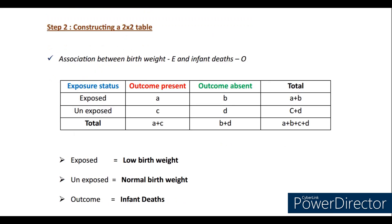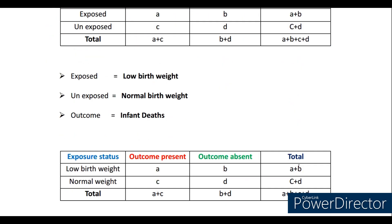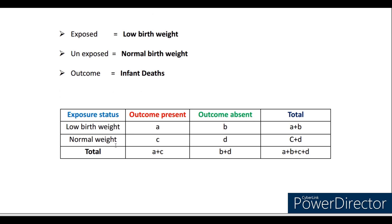The next step is construction of a 2x2 table. The table has exposure status, outcome present, outcome absent, and total. To construct it, we first need to understand what is exposure and what is outcome. In the question, they want to study the association between birth weight and infant deaths. So birth weight will be the exposure and infant deaths is the outcome. In our question, the exposure will be low birth weight, whereas unexposed will be normal birth weight. You replace the terms exposed and unexposed with low birth weight and normal birth weight.